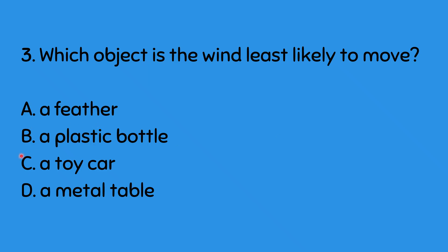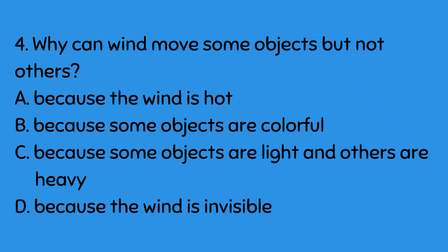The answer is letter D, a metal table. Number 4: Why can wind move some objects but not others? A. Because the wind is hot, B. Because some objects are colorful, C. Because some objects are light and others are heavy, D. Because the wind is invisible. What is your answer, kids? The answer is letter C: because some objects are light and others are heavy.